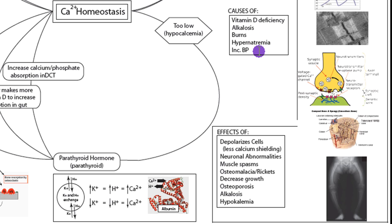Similarly, an increase in high blood pressure would cause the glomerular filtration rate (GFR) to be too high. That means there's not enough time to reabsorb calcium, so calcium will be excreted in the urine, causing hypocalcemia. So increased blood pressure also causes hypocalcemia.